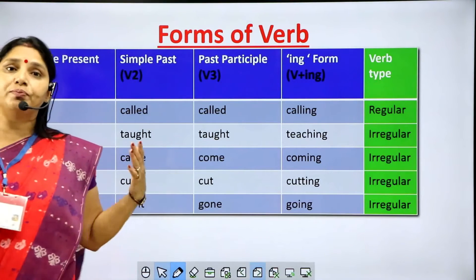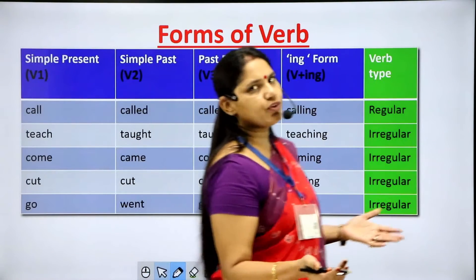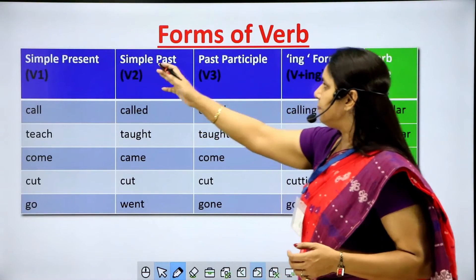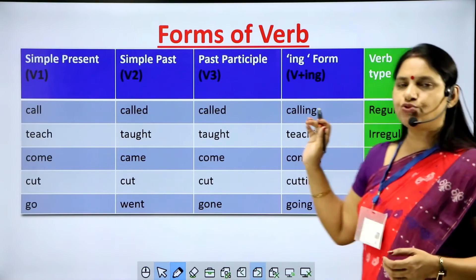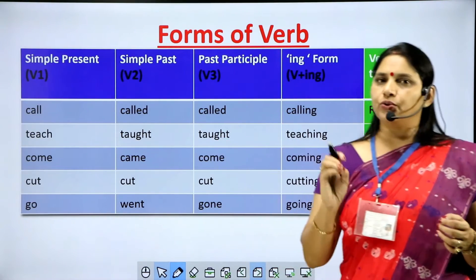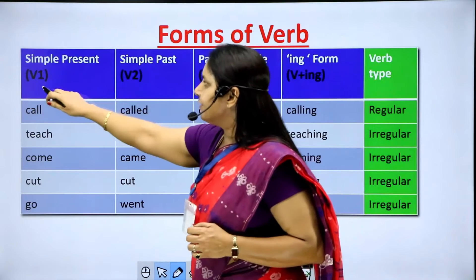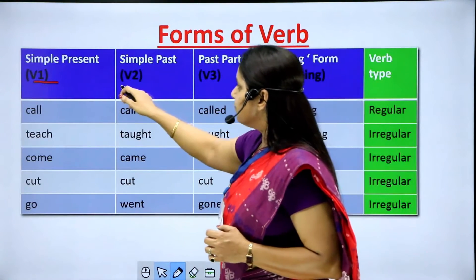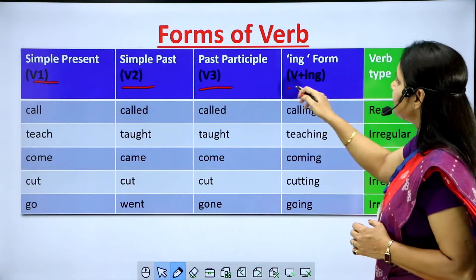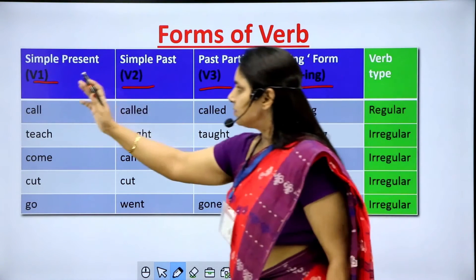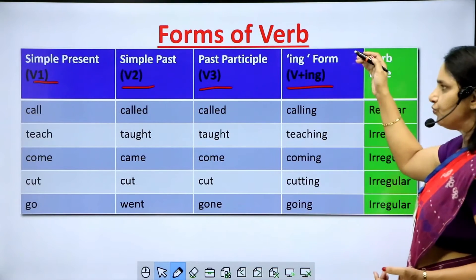Before beginning to learn tenses, we must be aware of the forms of verb used in different tenses: simple present (V1), simple past (V2), past participle (V3), and the ing form (V+ing). These are the four forms of verb in English. We do not have a future form; to tell future, we use modal auxiliaries will or shall. For example, the verb 'call': V1 is 'call', V2 is 'called', V3 is 'called', and V+ing is 'calling'.